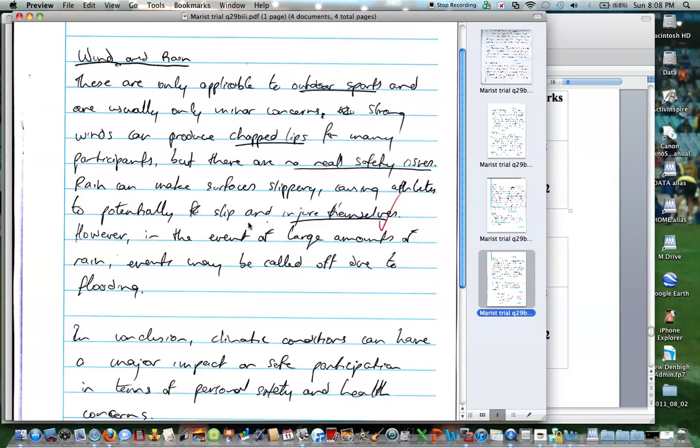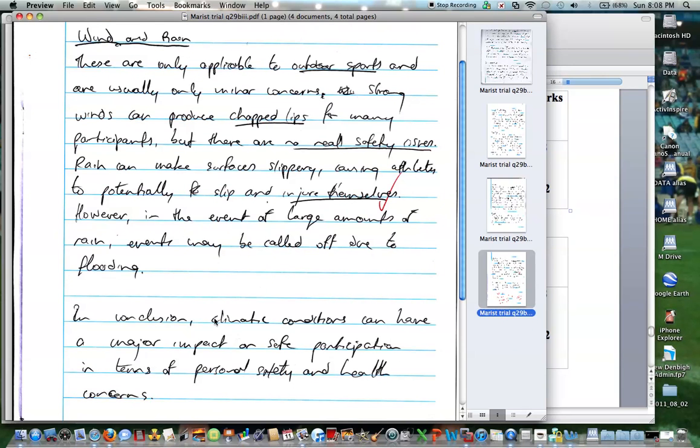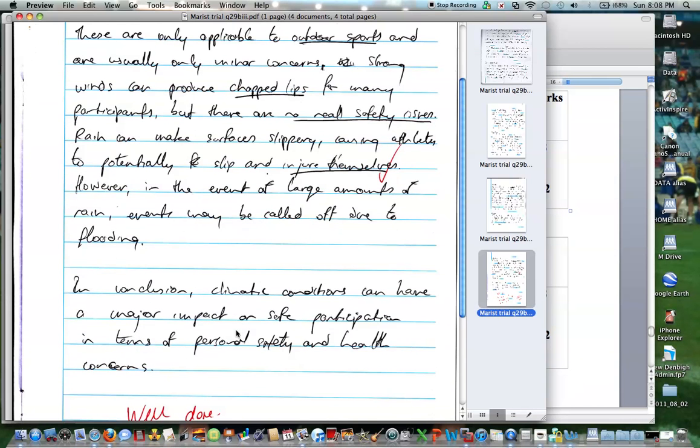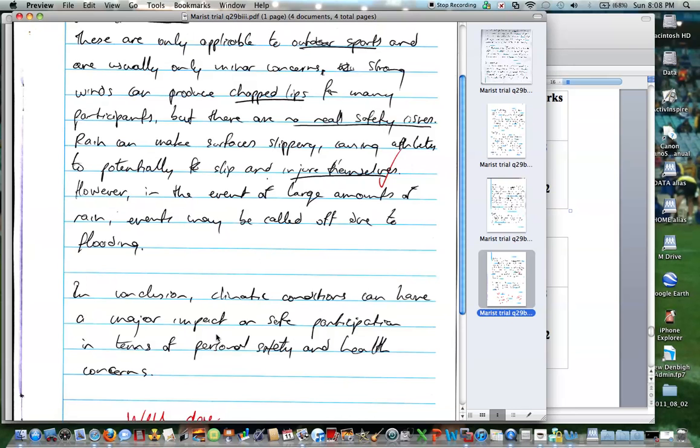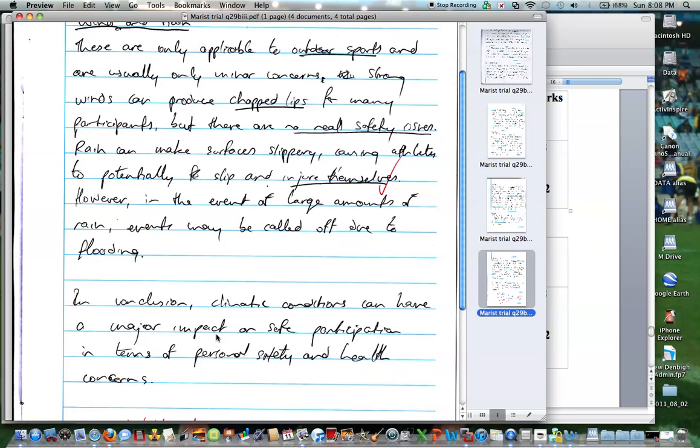There we go. This one, we've got wind and rain. And then he gives a little conclusion. So if I'm going to pick it to pieces, it's a little bit of an English-style answer, which we want to try and avoid. But I'm happy for us to sum up in the sense that he's talked about climatic conditions can have a major impact on safe participation. So if anything, with this little last paragraph here, we've covered all areas of the syllabus. He's reminding the marker that he's talking about safe participation. So it continues to be fresh in his mind.